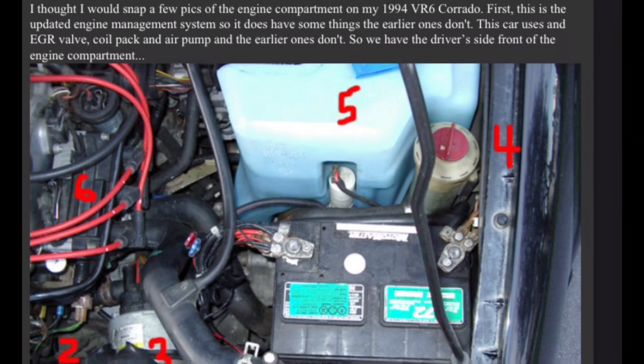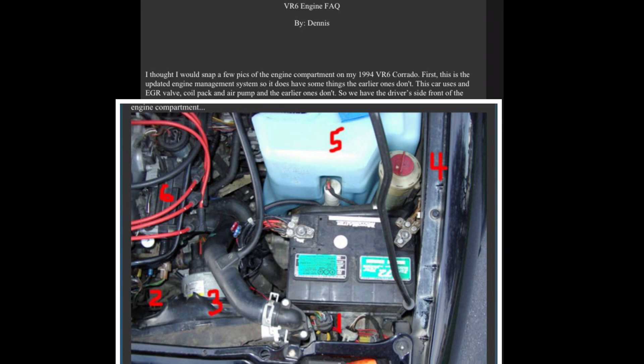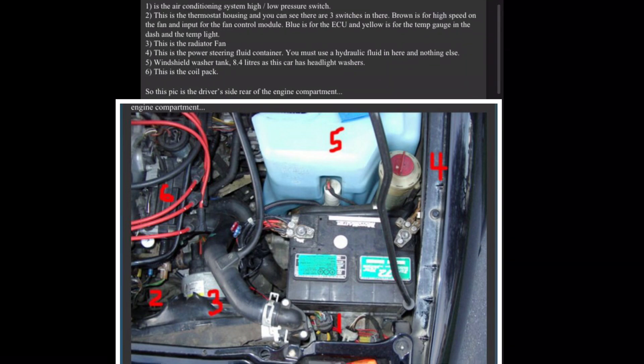So we have the driver's side front of the engine compartment, pick one. In no real order, I will simply list what caught my eye and some will be repeated for reference. I didn't list the battery, but it is the black thing in front of the AC pressure switch. One is the air conditioning system high-low pressure switch. Two, this is the thermostat housing and you can see there are three switches in there. Brown is for high speed on the fan and input for the fan control module. Blue is for the ECU and yellow is for the temp gauge in the dash and the temp light.